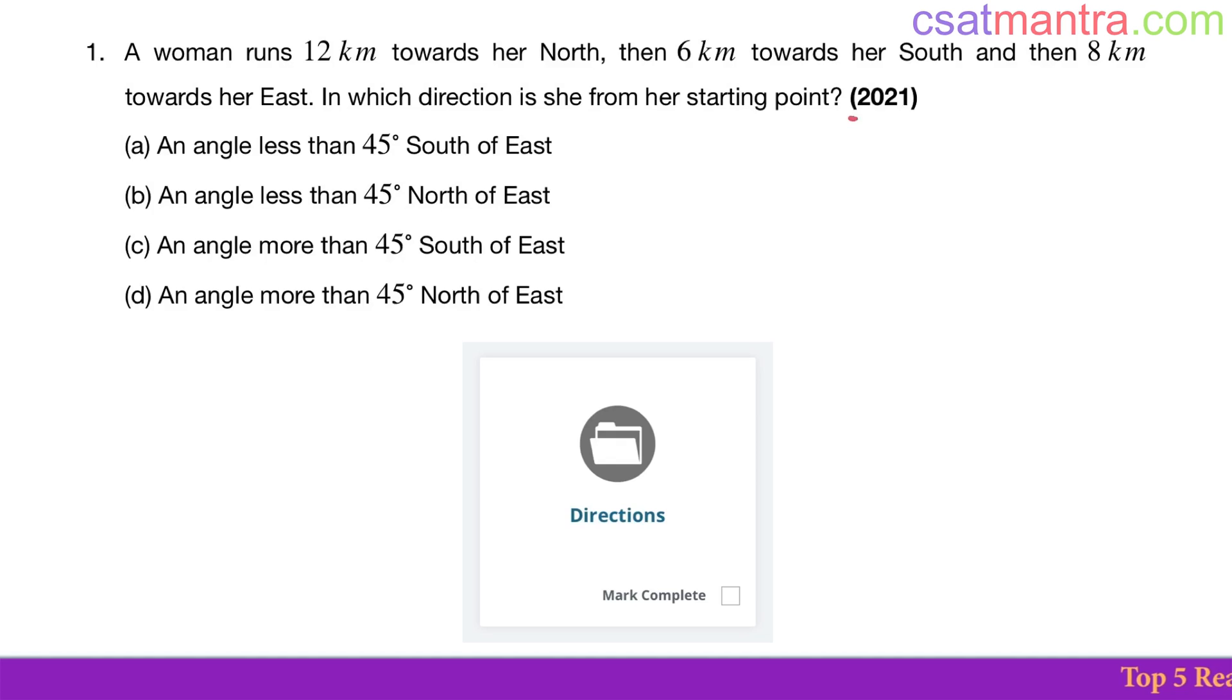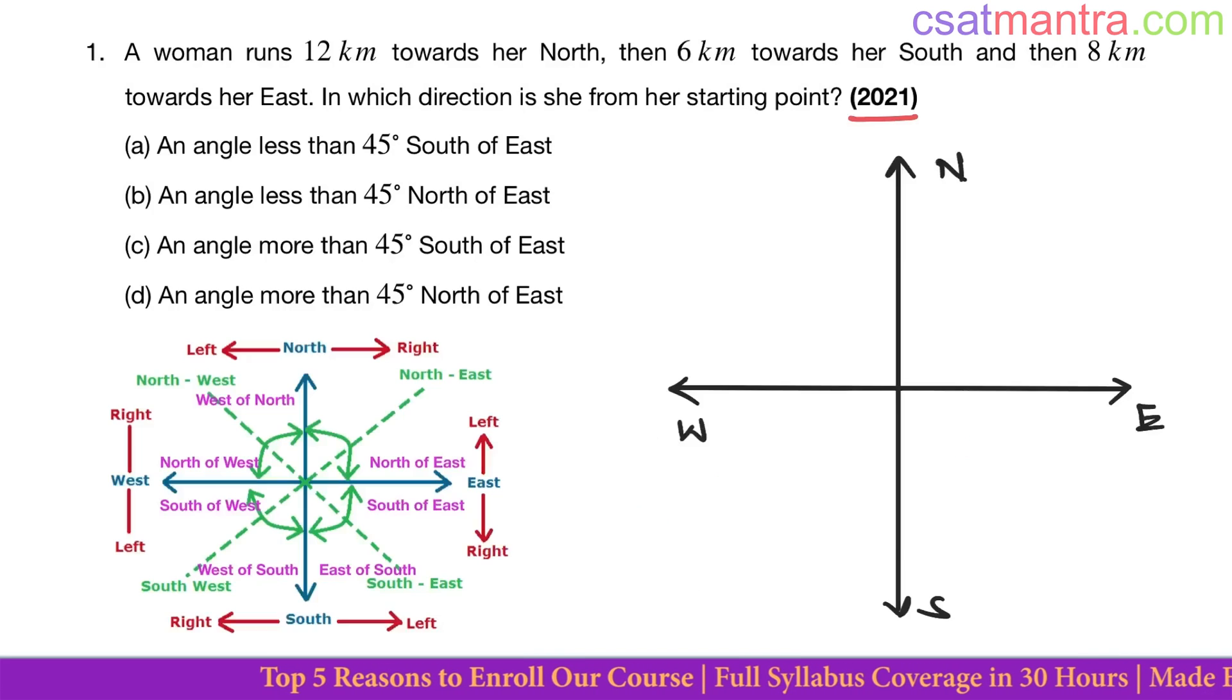This question was asked in 2021, based on directions. One to two questions will be asked from this lecture. Very easy and scoring lecture - kindly master it. Low-hanging fruit you should not miss, my friends. A woman runs 12 kilometers...